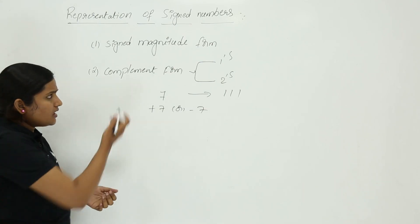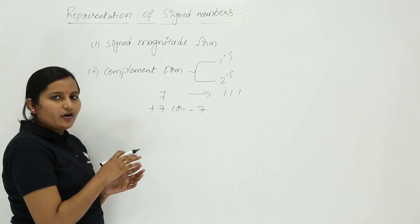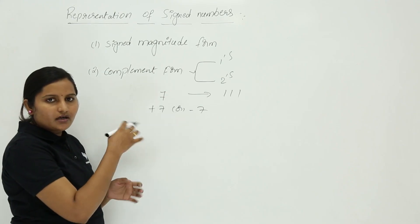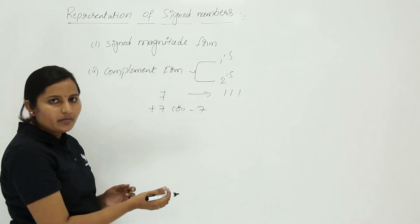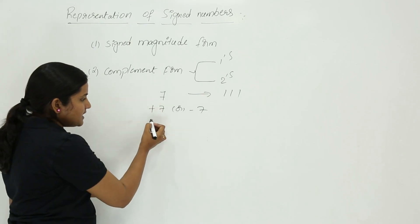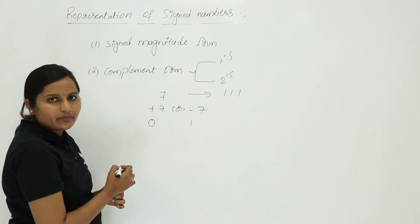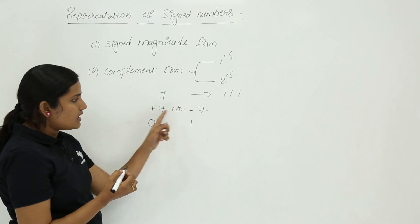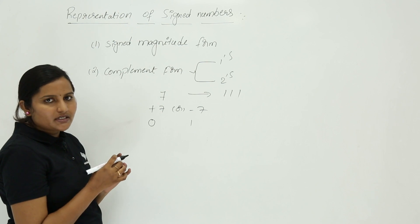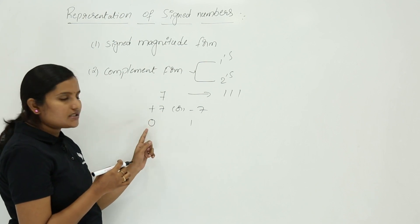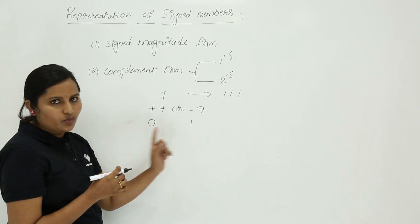Now we will discuss signed magnitude form. In any form — whether signed magnitude or complement form — the plus sign is represented as 0 and the minus sign is represented as 1. This is called the sign bit. The sign bit for plus is 0, and the sign bit for minus is 1.